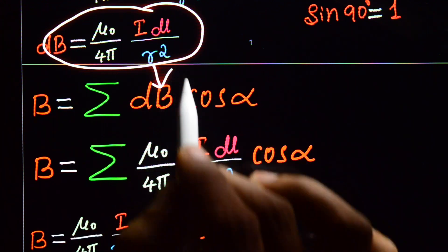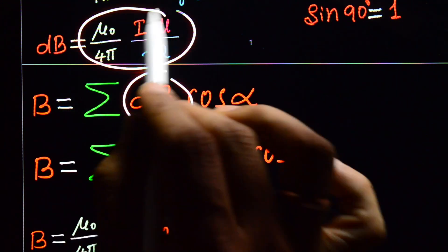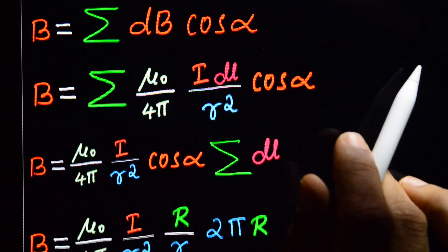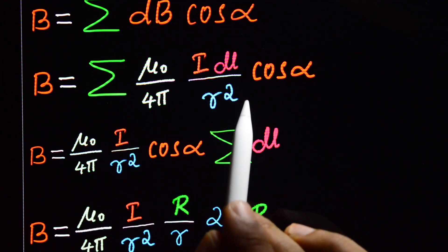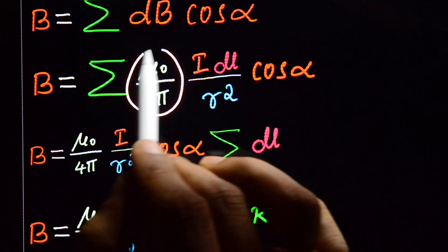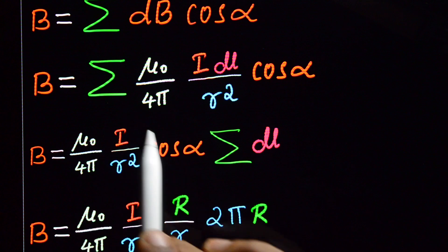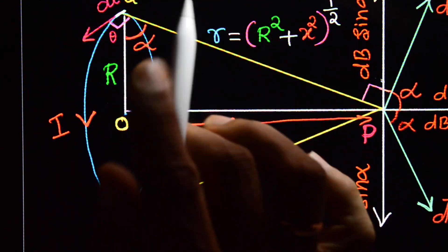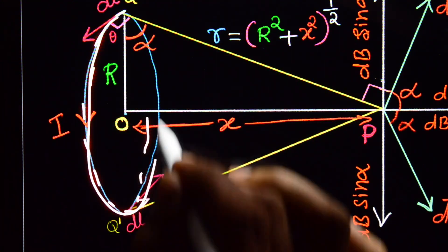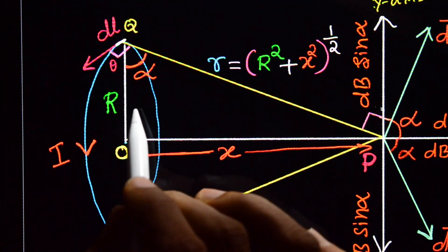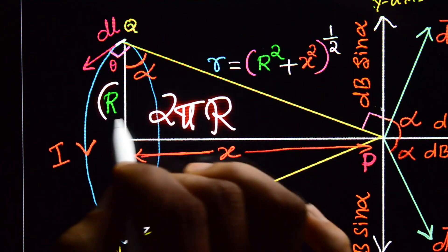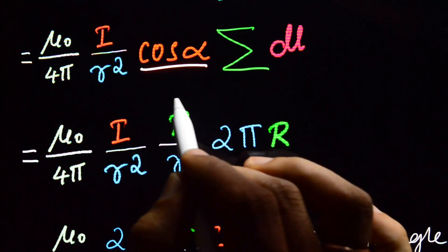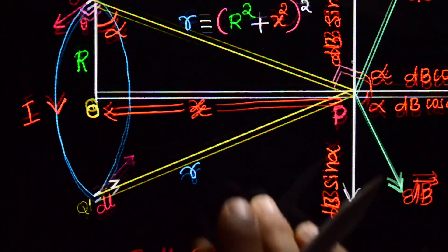Substituting this value of DB into B = Σ DB cos(alpha), we get B = (μ₀/4π) × (I/r²) × cos(alpha) × Σ DL. The summation of DL gives the circumference of the circular loop, which is 2πR. Substituting, B = (μ₀/4π) × (I/r²) × cos(alpha) × 2πR.